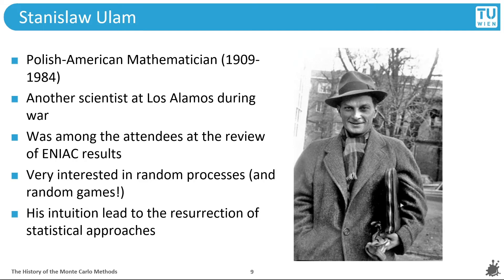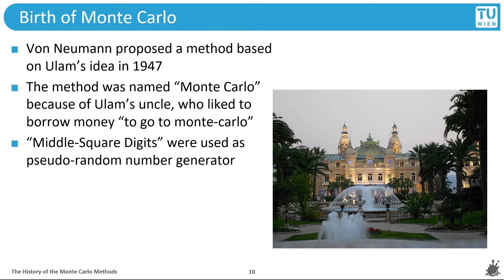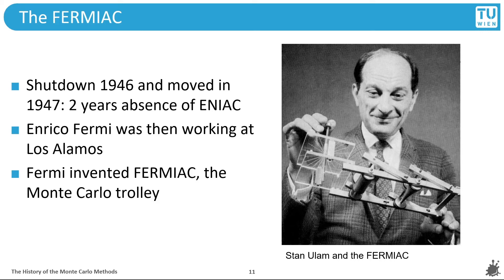He shared his ideas with von Neumann, who understood the significance of Ulam's idea and proposed a detailed outline of a statistical approach for solving the problem of neutron diffusion in 1947. Since the project was confidential, it was necessary to have a code name. Nicholas Metropolis suggested the name Monte Carlo because Stan Ulam had an uncle that would borrow money because he just had to go to the casino in Monte Carlo — the name stuck. It was necessary to have a source for pseudorandom numbers, and von Neumann invented the method of middle square digits. It was simple and crude, but relatively fast. After the review, ENIAC was shut down in 1946 and moved to Aberdeen in 1947, and so was unavailable for about two years. Many of the scientists thought that the machine would never survive the transport and run another calculation.